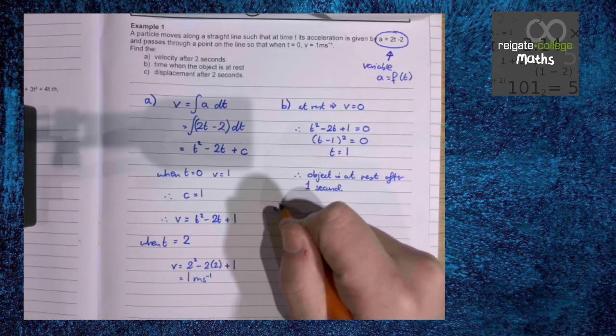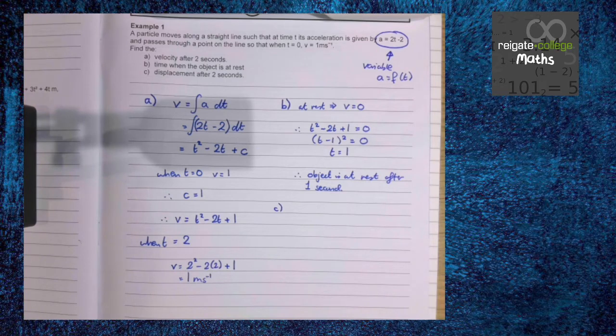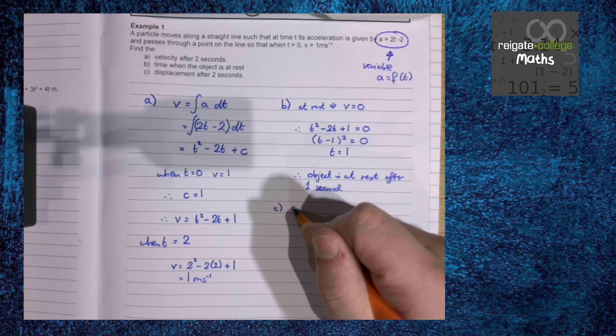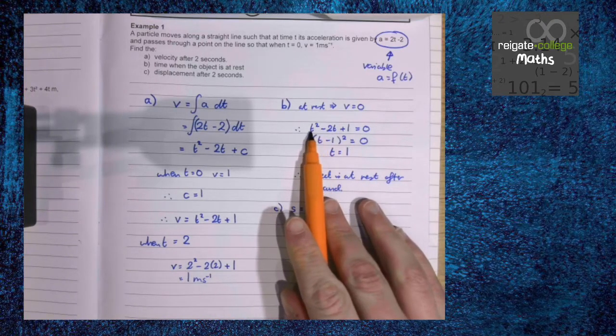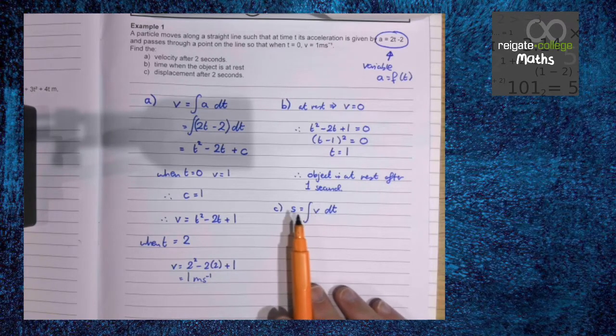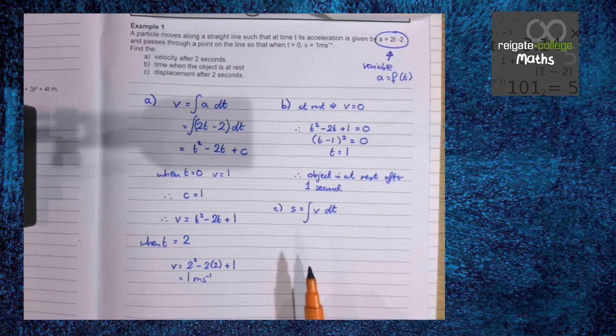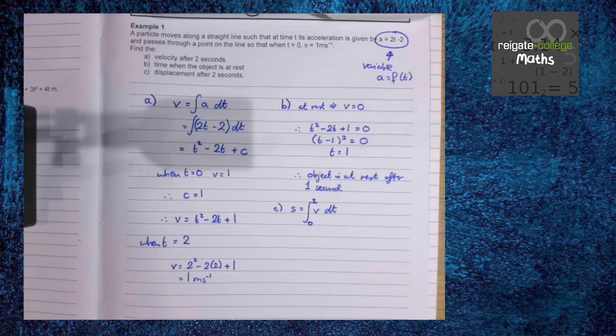Part c: find the displacement after 2 seconds. So what we're doing is we are integrating velocity. There are a couple of ways we can do this. After 2 seconds is in the first 2 seconds, so it's going from time is 0 to time is 2. We can integrate, put some numbers in, work out our new plus c and then put in t as 2. Or if we're certain that this velocity does not go below the horizontal axis, which in this case it doesn't because it only is at rest for 1 point, we can actually do integration between limits.